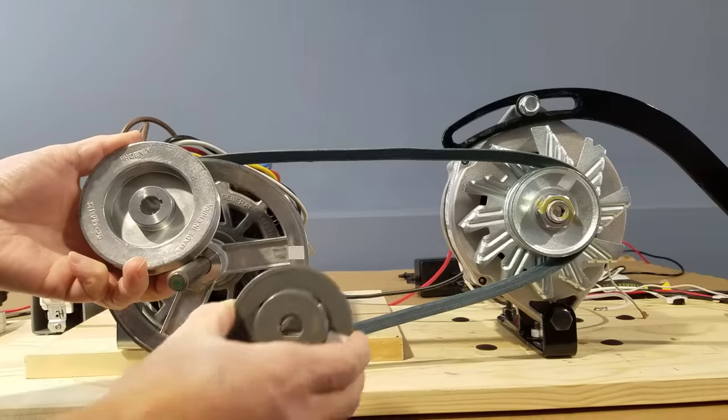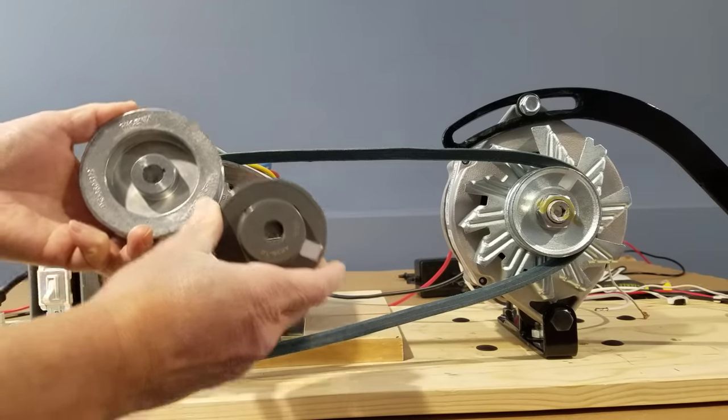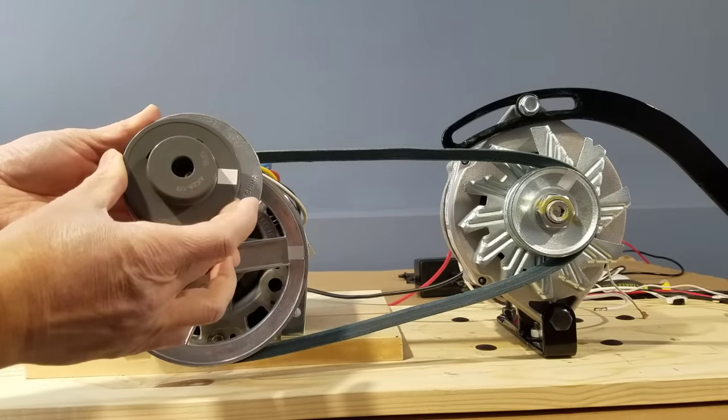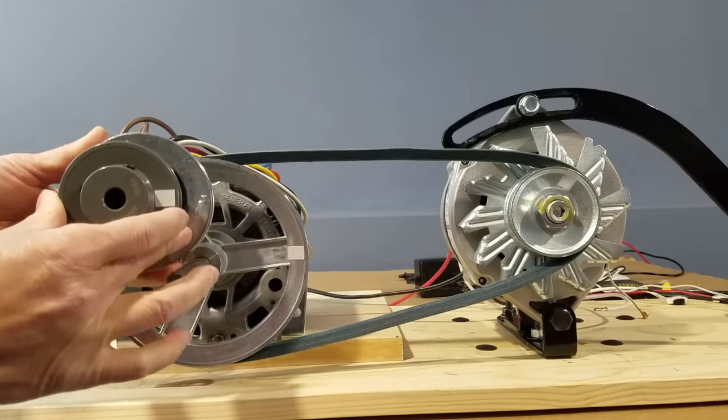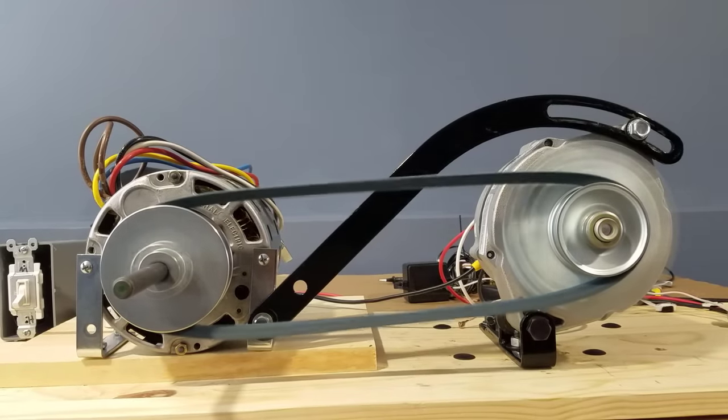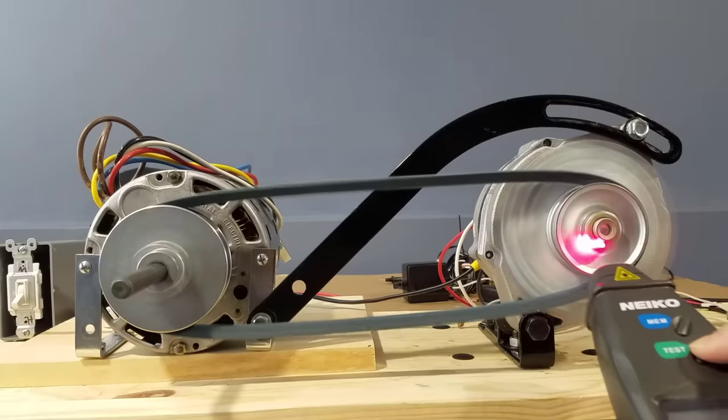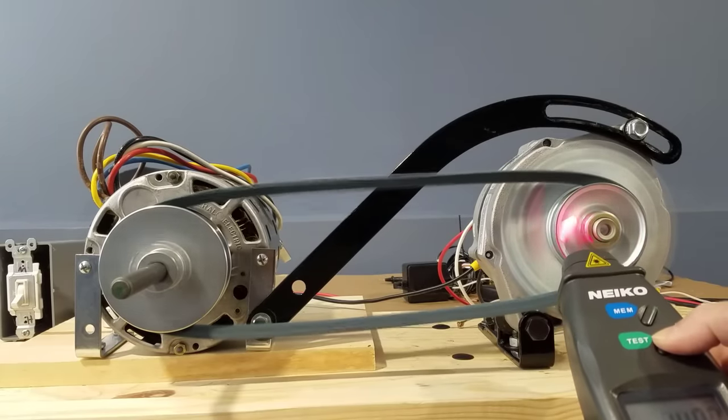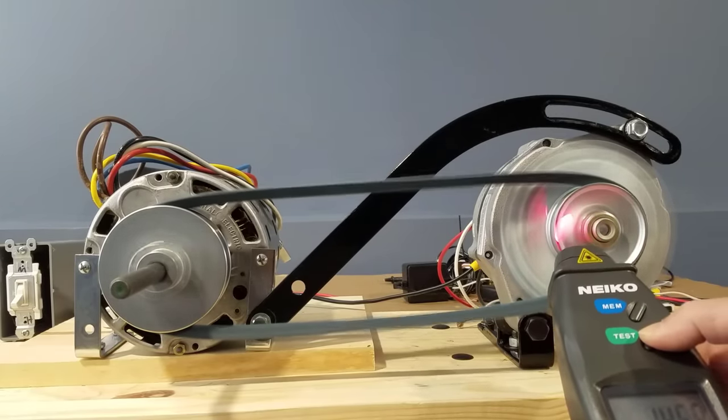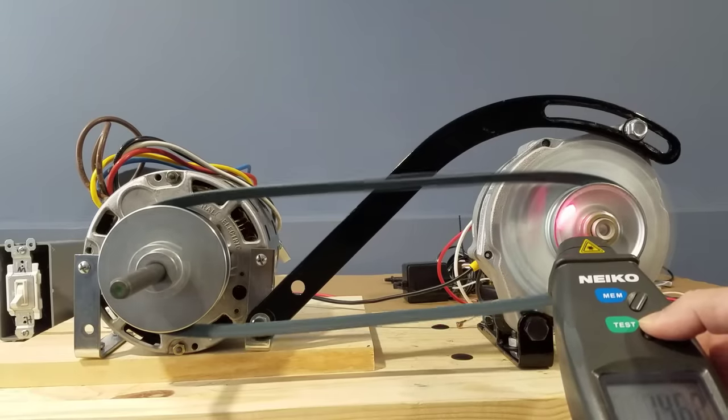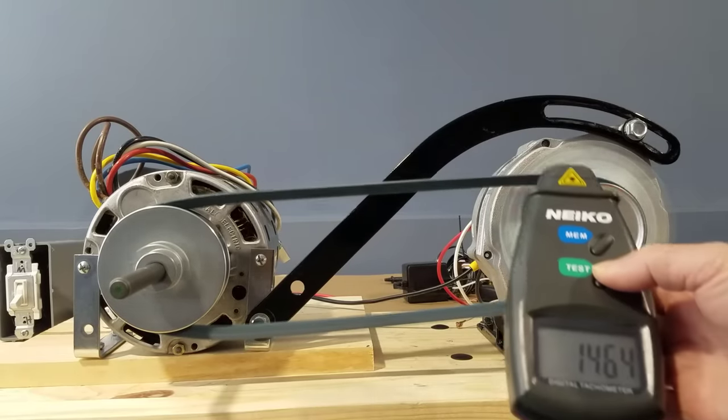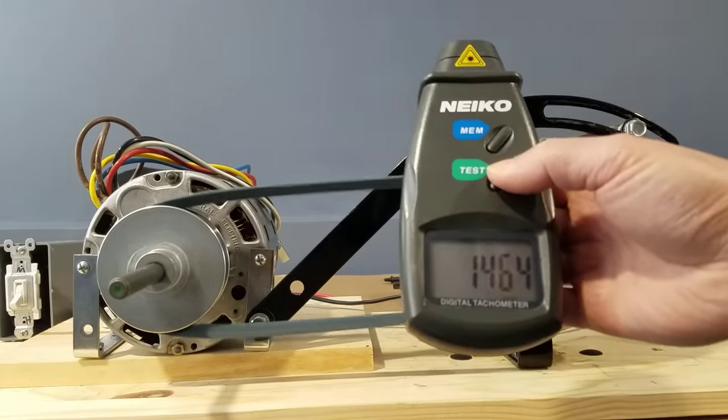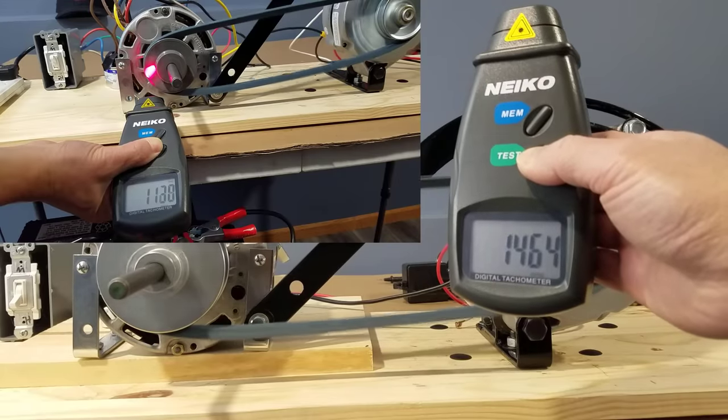Let's try to reduce the pulley from 3 to 1 ratio to 1.5 to 1 ratio. The furnace motor sounds like it's working its maximum power. A 1.5 to 1 pulley ratio is all this motor can handle. And we got a good decent reading for the RPM, 1464 versus 1130 on the previous setup.